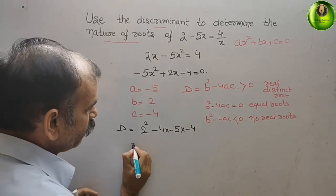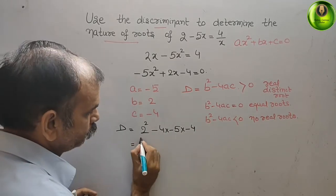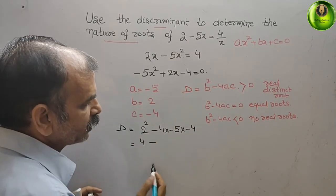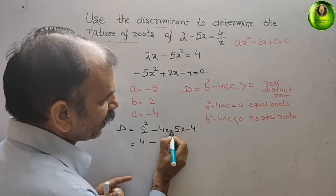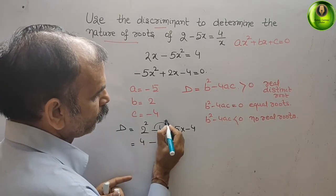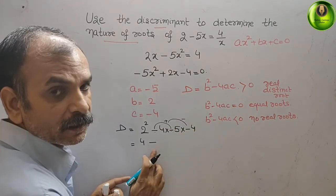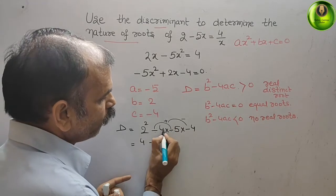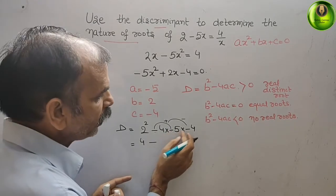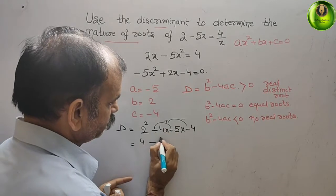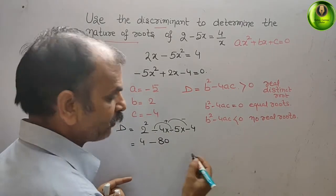Now calculating: 2 squared is 4. Then 4 minus — as you can see I have written — minus into minus is plus, plus into minus is minus, so we have minus here. 4 into 5 is 20, 20 into 4 is 80. So 4 minus 80 is minus 76.